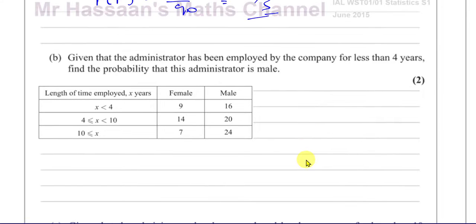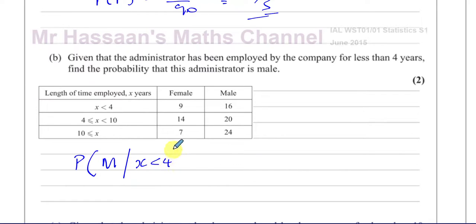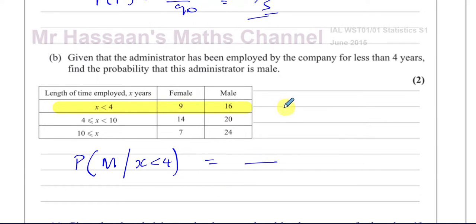Part B says: given that the administrator has been employed by the company for less than 4 years, find the probability that this administrator is male. So here we have a conditional probability — the probability that the administrator is male, given that the time employed is less than 4 years. Given that means we restrict the sample set. Our total now is 25, and 16 of them are male, so the answer is 16 over 25.